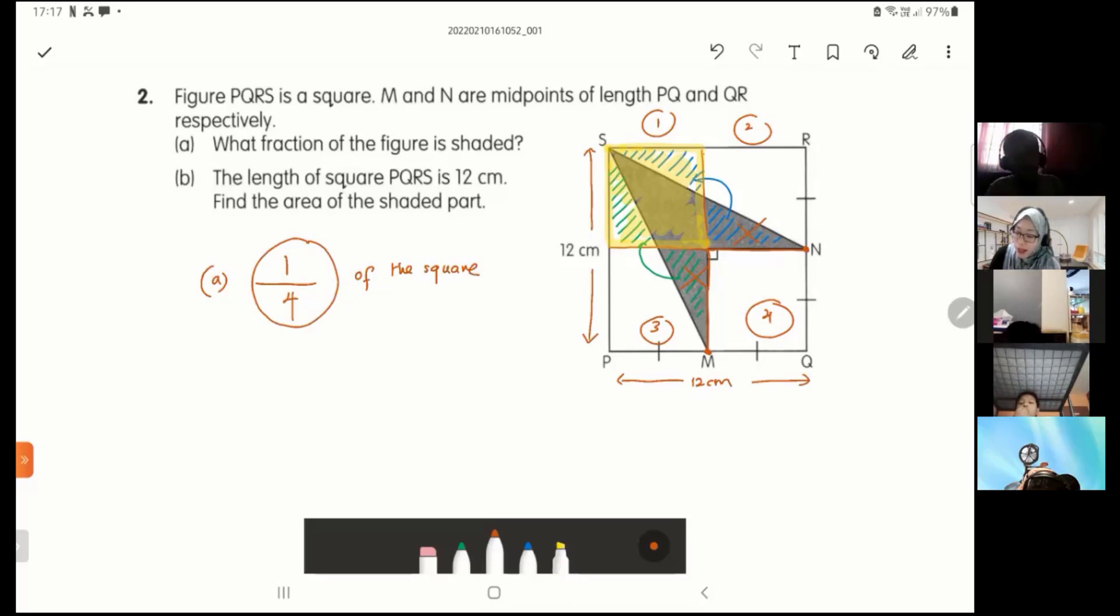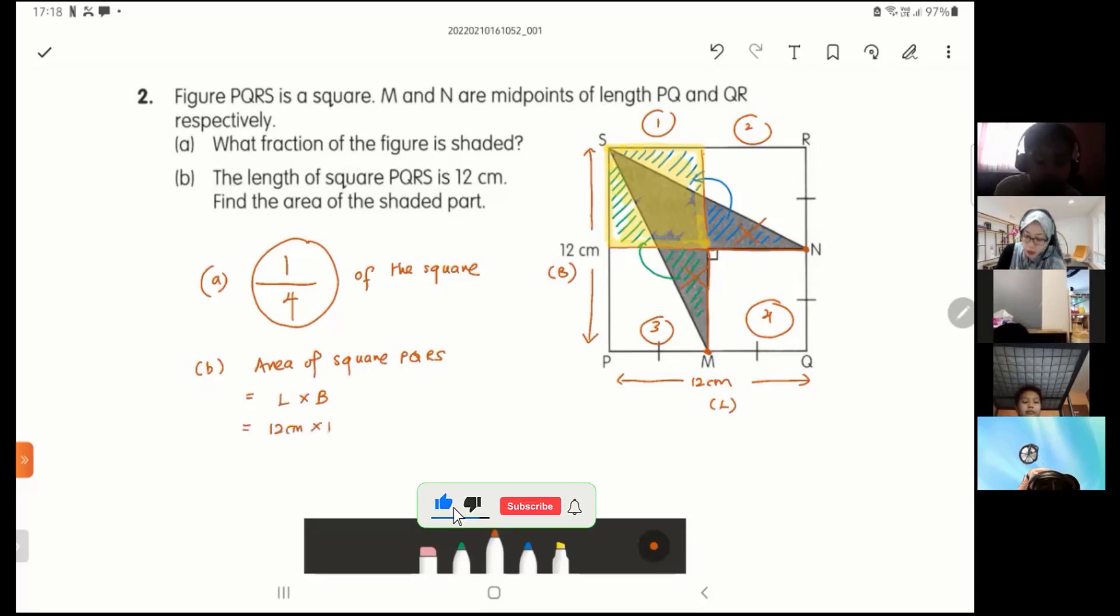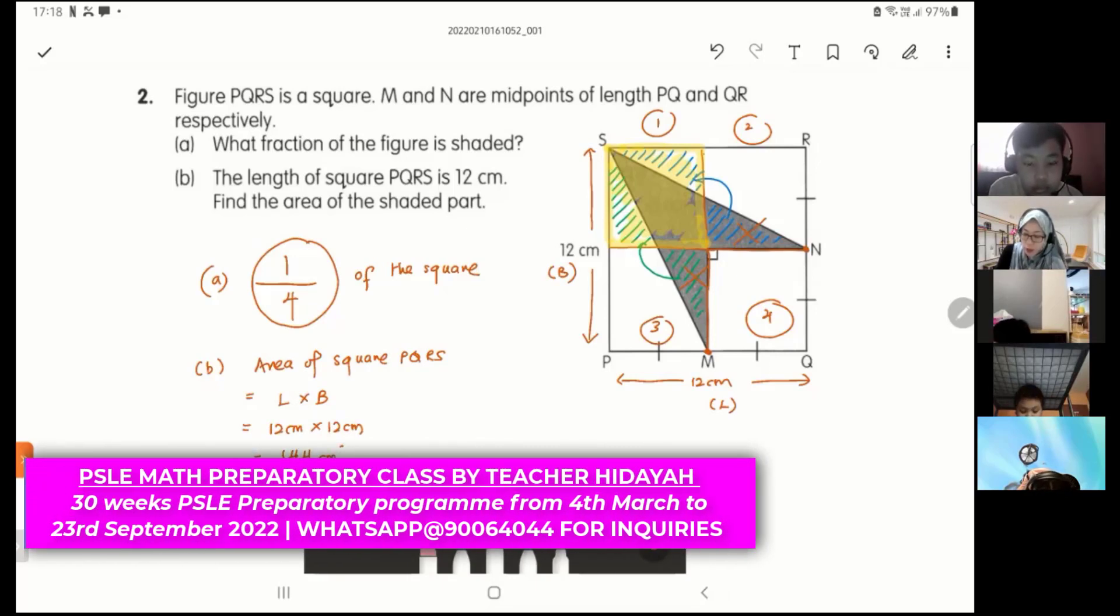Now they ask you the length of square PQRS is 12 centimeter, which means a square has all the sides equal. So this one is 12 cm, this is also 12 cm. Now I want to know, find the area of the shaded part. So the shaded part is actually one quarter of the square. The square area. What is the square area? Can I find the square area first? Area of square PQRS equals length times breadth, equals to 12 cm times 12 cm, equals to 144 centimeter squared.